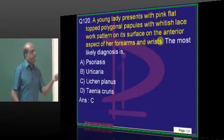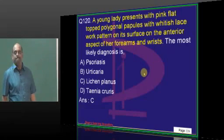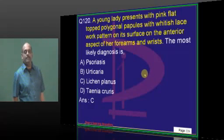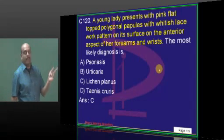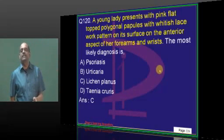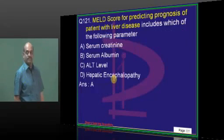The four P's — polygonal, purpuric, purplish papules — equals lichen planus.